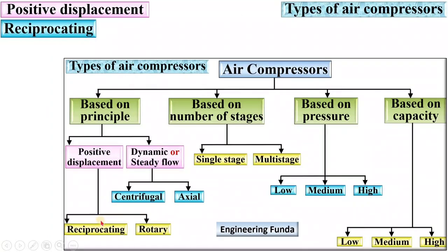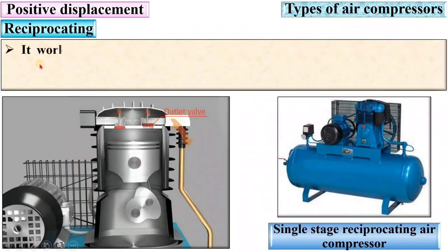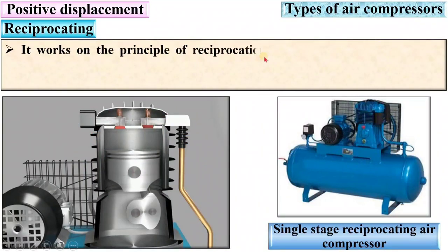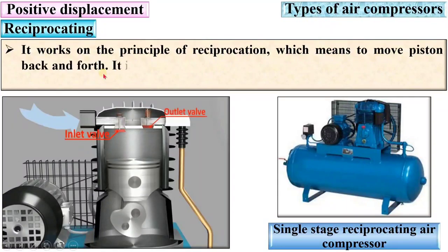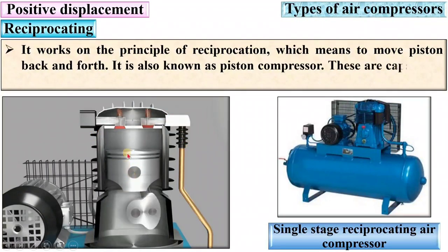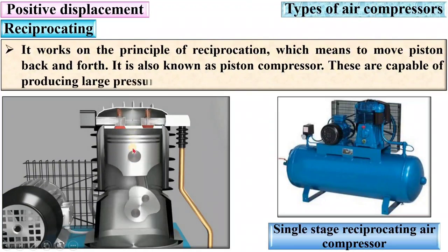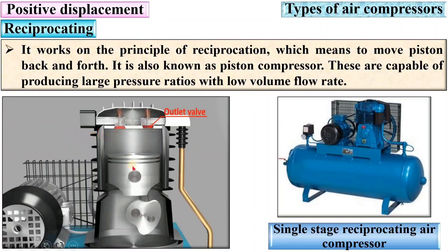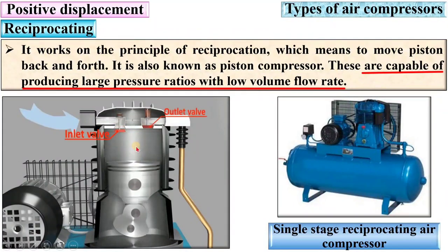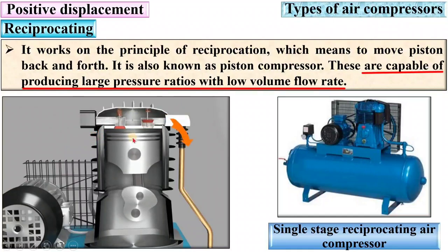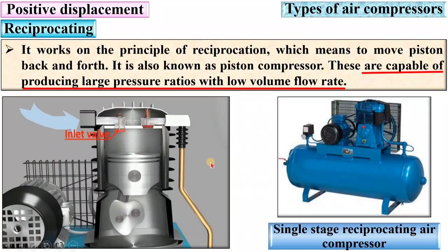Positive displacement is further classified as reciprocating and rotary compressor. The reciprocating compressor works on the principle of reciprocation, which means moving the piston back and forth. The piston reciprocates inside the cylinder — that is why it is called a reciprocating air compressor. These are capable of producing large pressure ratio with low volume flow rate.